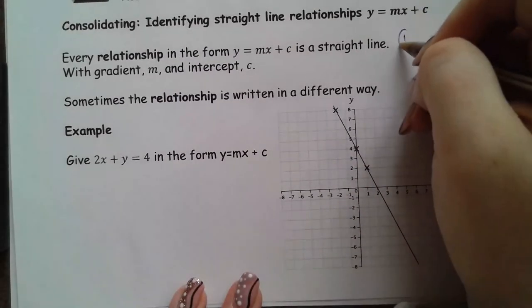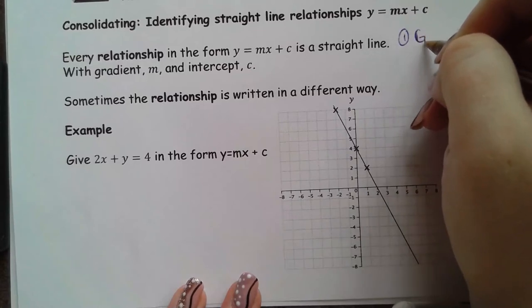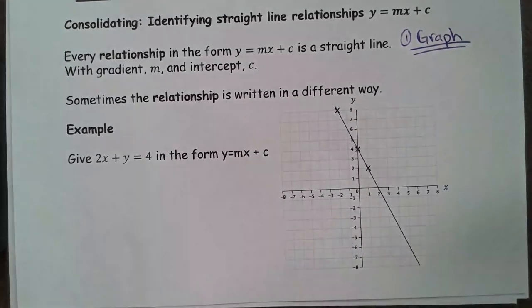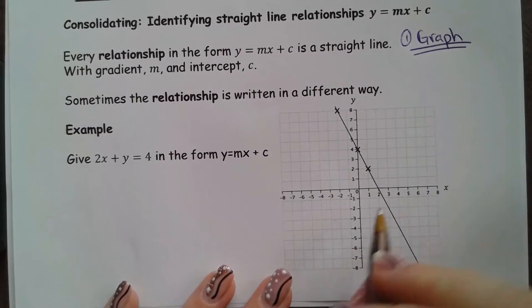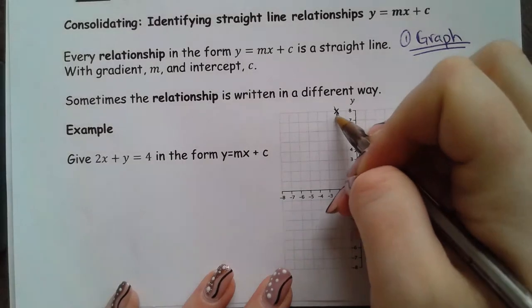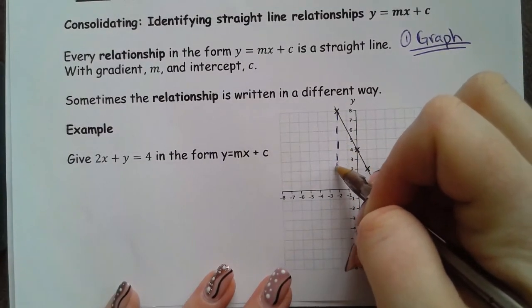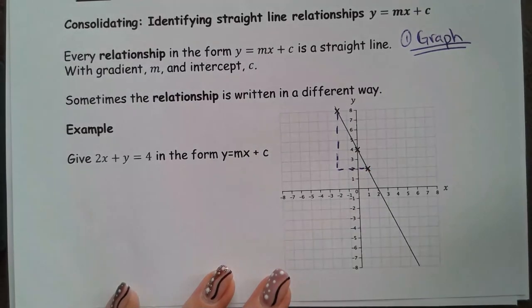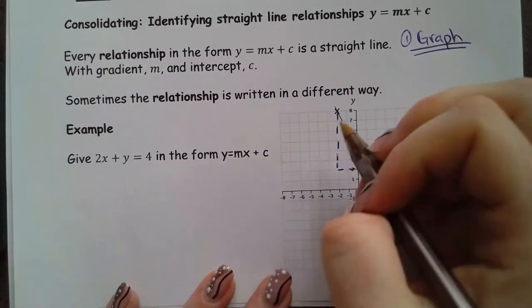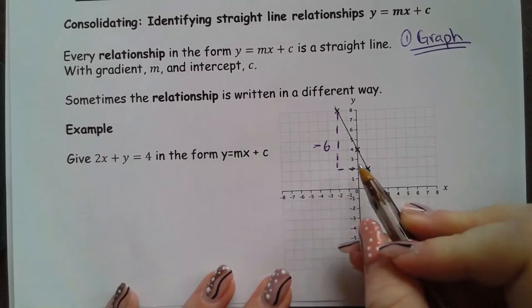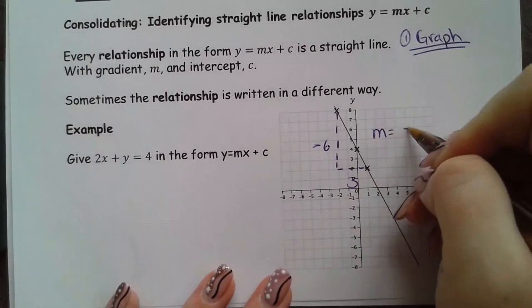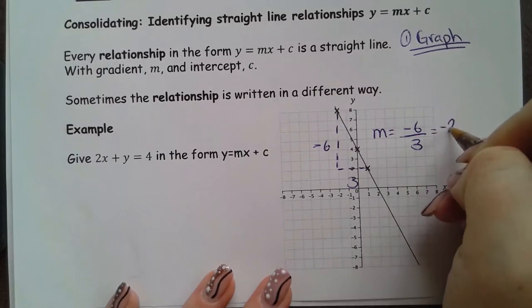Using the graph is method 1. So, we've drawn this already. And we know for y equals mx plus c, we need a gradient. So, I'm going to start by drawing myself a triangle somewhere here. And I'm going to use the points that I've already got. So, I know that I'm going from 8 to 2. So, negative 6. And I'm going 3 across. So, my gradient is negative 6 over 3 or negative 2.